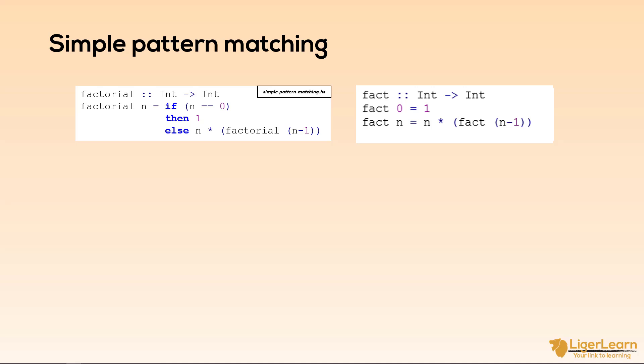You will notice that the type signatures of the two functions are the same. They both take an int and return an int, but the second definition has a peculiarity. At first glance, it looks like we are defining the function twice, and surely that wouldn't be allowed.